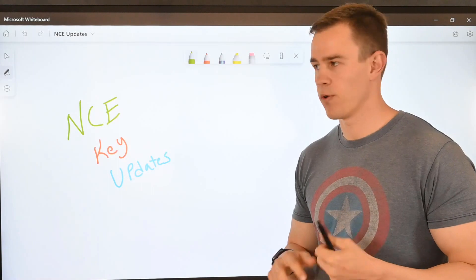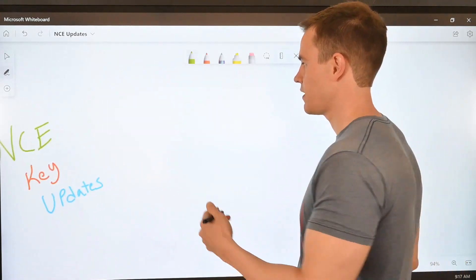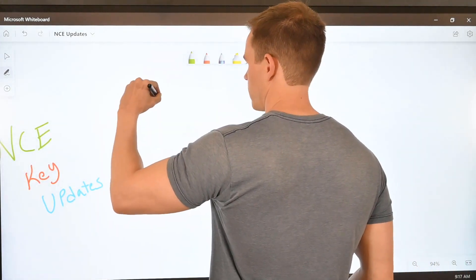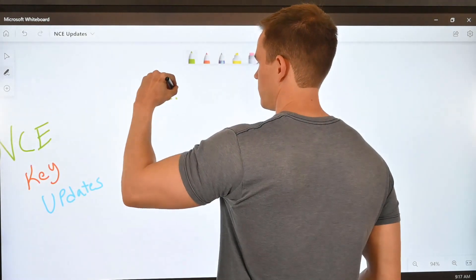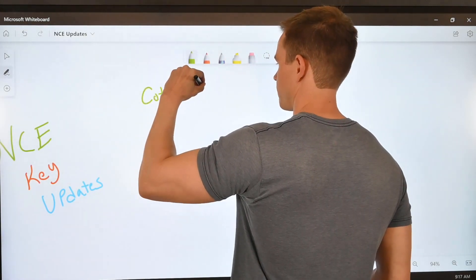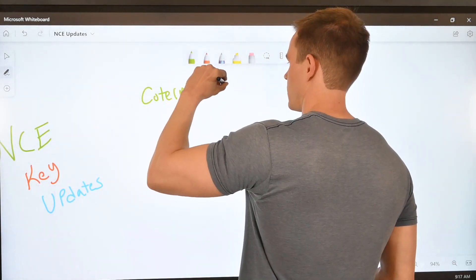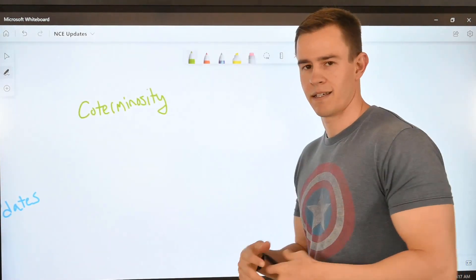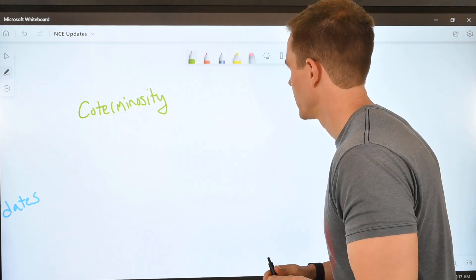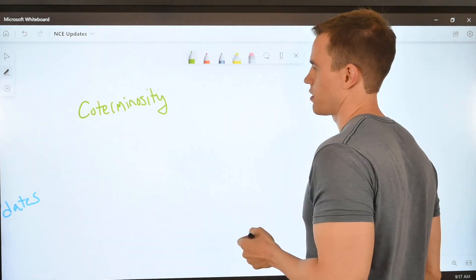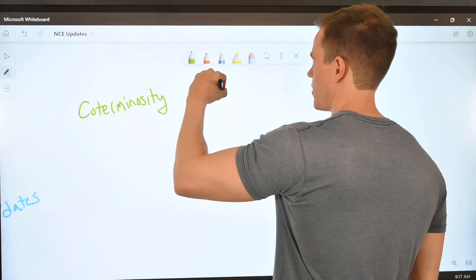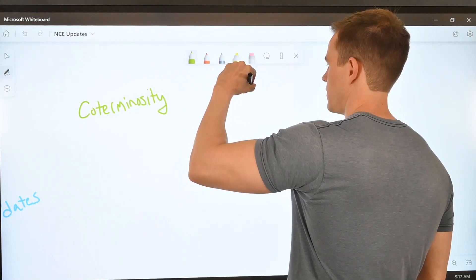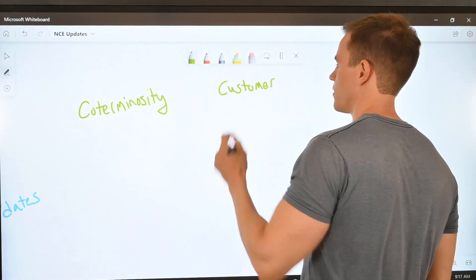The first update I'm going to be talking about today in terminology is called coterminosity. This is something that's going to greatly reduce operational overhead at least at a per customer level. Prior to coterminosity, when you think about a customer that you manage today and moving them into new commerce subscriptions,